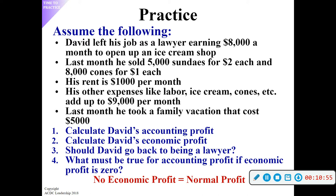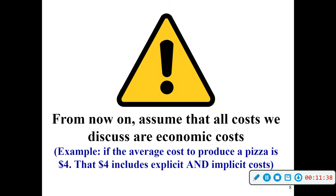For example, if he had given up earning twenty thousand dollars a month as a lawyer and is only making eight thousand running an ice cream shop, economically we'd say go back to being a lawyer — you're down twelve thousand dollars. The accountant would say great, you made eight thousand this month; the economist would say you lost twelve thousand when you account for opportunity cost. From this point forward, everything is economic cost.